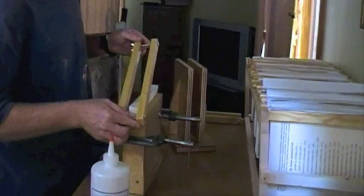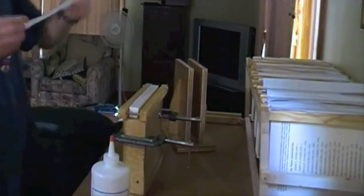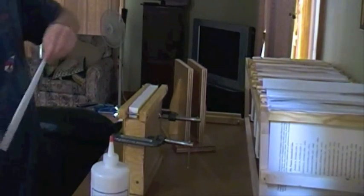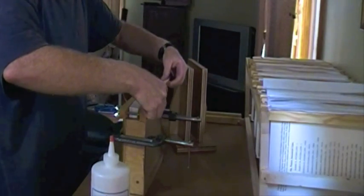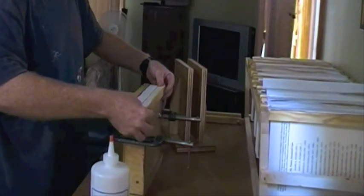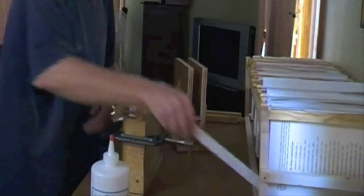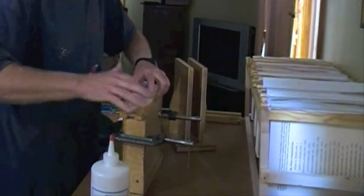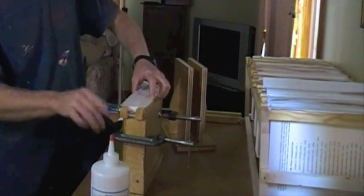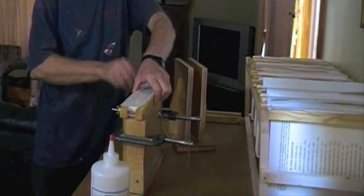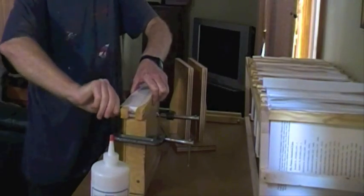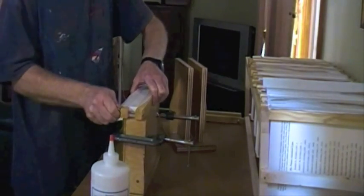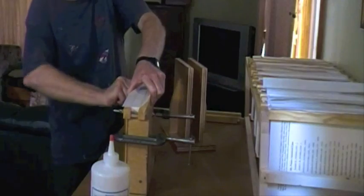A little homemade clamps. Wax paper. This keeps the glue from sticking to your clamps. You tighten these up. Tighten them up evenly. Couple turns each. Nice and tight. You might want to use a wrench.